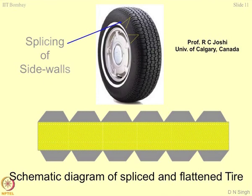This part of the slides is taken from Professor R.C. Joshi's presentation, from University of Calgary, Canada, who visited about 5 to 7 years back. You take a tire and splice it from the side walls. This is how the marks are made — you can cut the rubber tire like this. Then straighten it. One rubber tire after splicing and straightening becomes a sheet, approximately 1 meter.